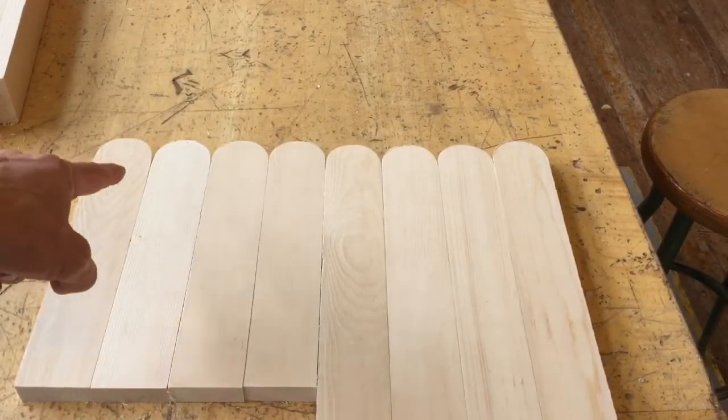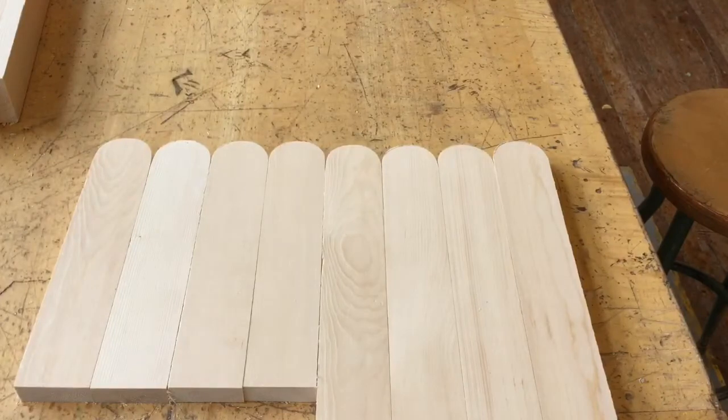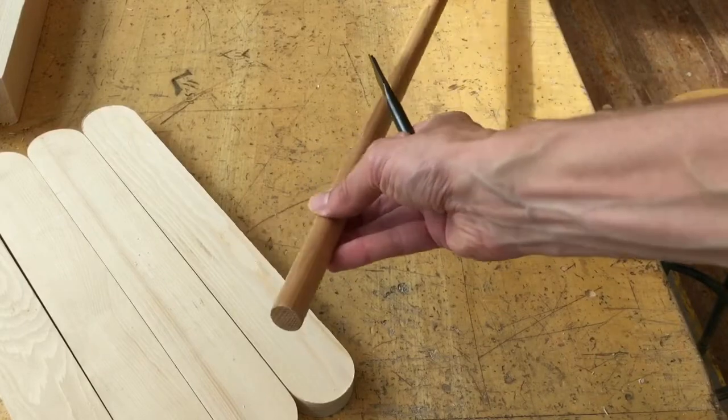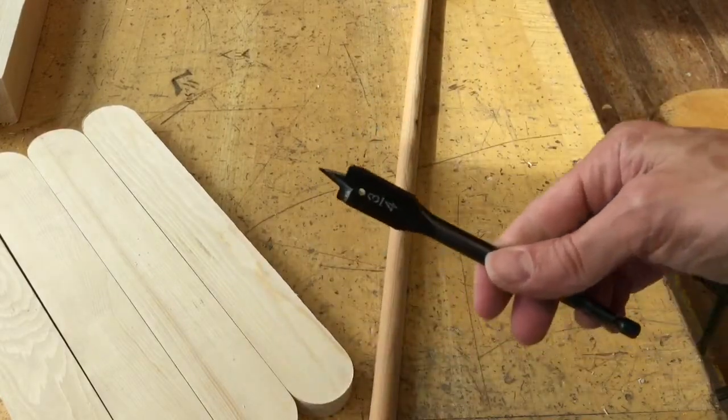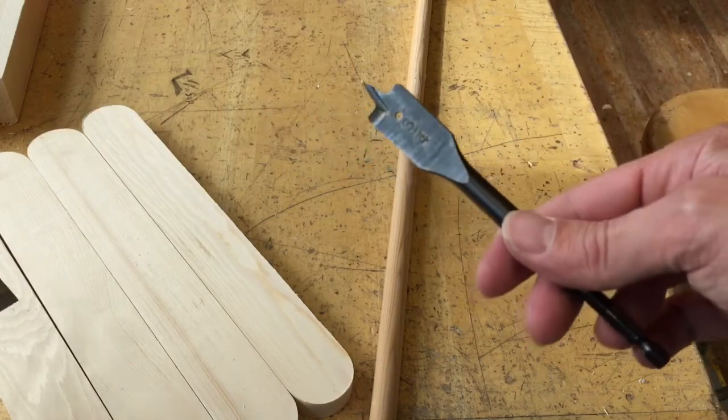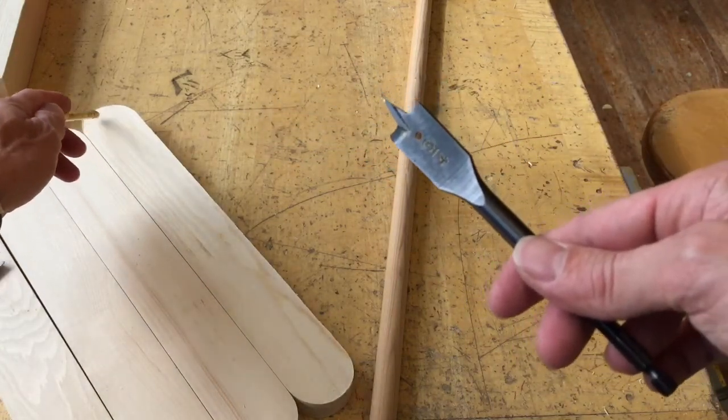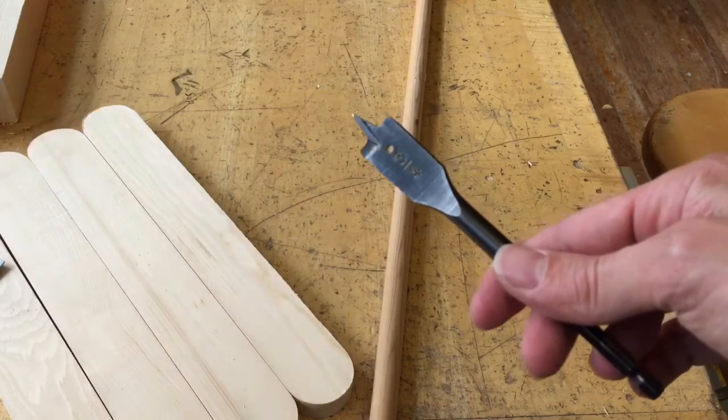Next we have to drill a hole in the end of all of these and get them in the same place so they all line up. We're using three-quarter inch doweling, so we'll use a three-quarter inch spade bit, and then measure a spot that's right in the center, five-eighths from each side and from the end.